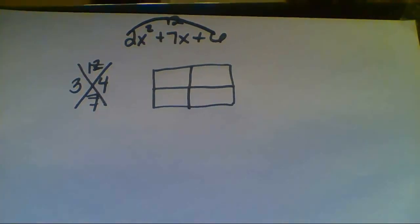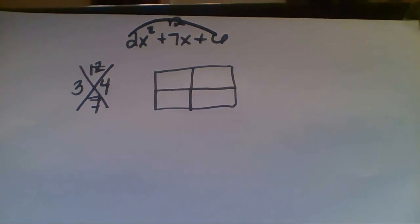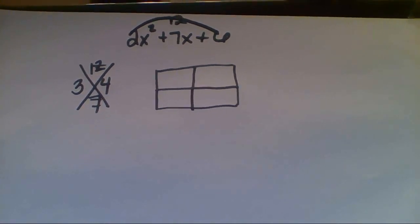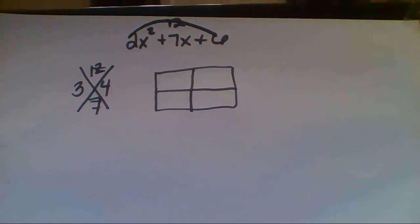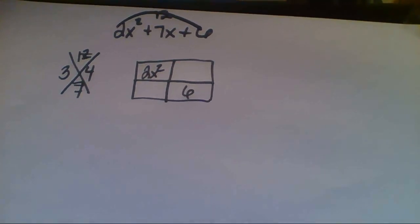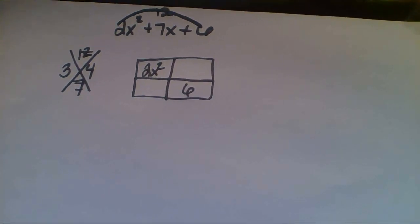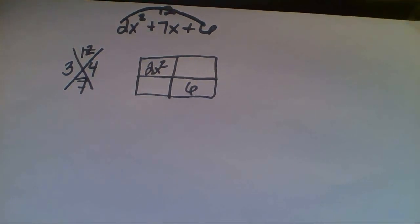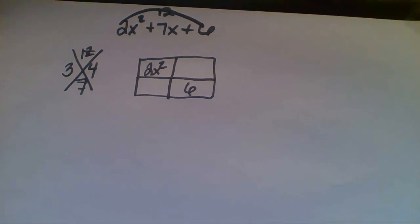So now it's time to put the terms into the box. We notice that we have three terms, but we have four spots in our box. First we place the 2x squared and the 6. The 7x is going to get split between the other two boxes.